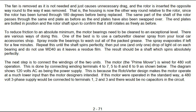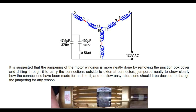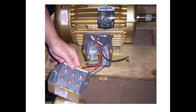The next step is to connect the windings of the two units. The motor, the prime mover, is wired for 480-volt operation. This is done by connecting winding terminals 4 to 7, 5 to 8, and 6 to 9. The diagram shows 120 volts AC as the power supply, because the Rotoverter design makes the motor operate at a much lower input than the motor designers intended. If operated in the standard way, a 480-volt three-phase supply would be connected to terminals 1, 2 and 3 with no capacitors in the circuit. It is suggested that the jumpering of the motor windings is more neatly done by removing the junction box cover and drilling through it to carry the connections outside to external connectors, to allow easy alterations should it be decided to change the jumpering for any reason.